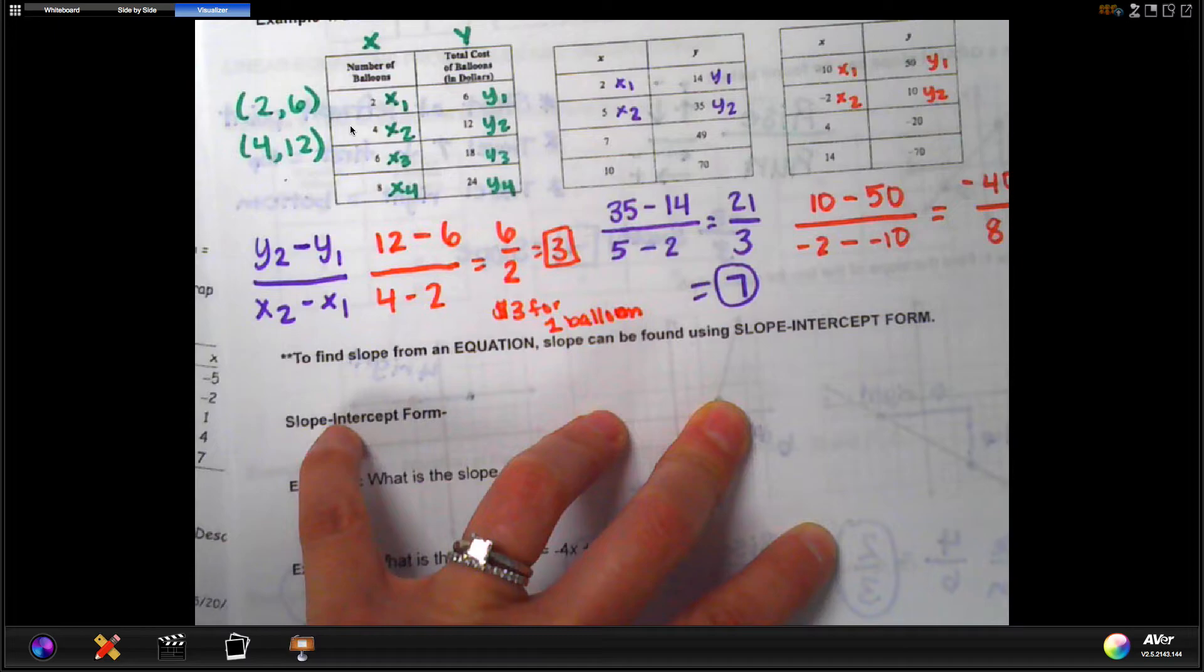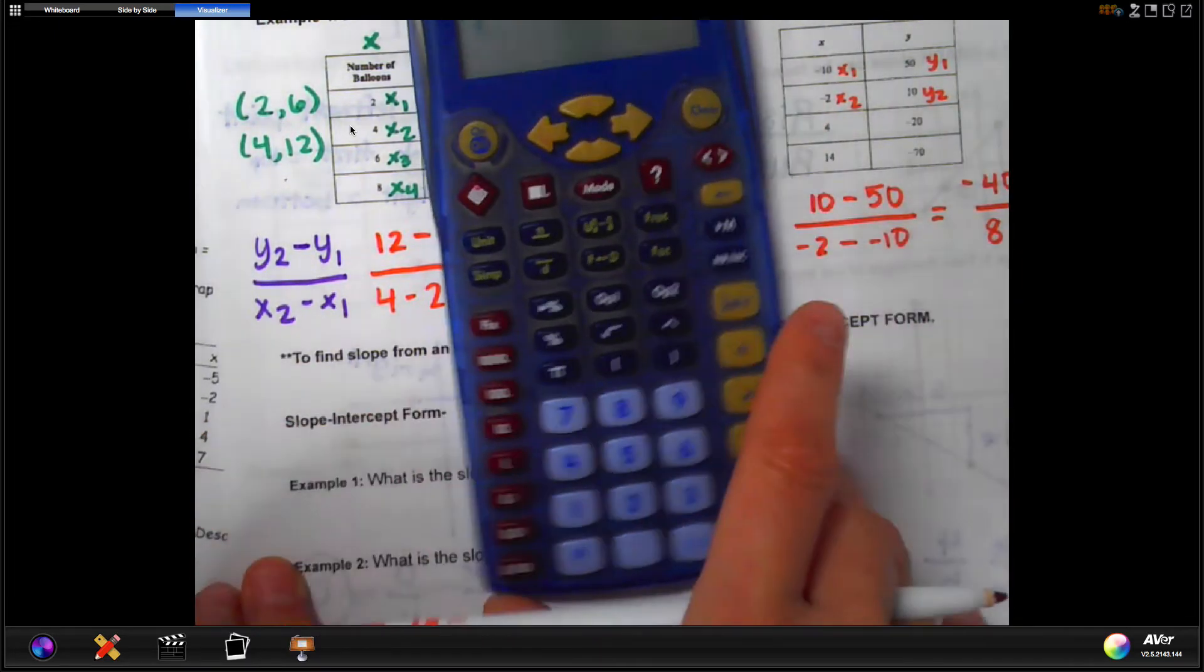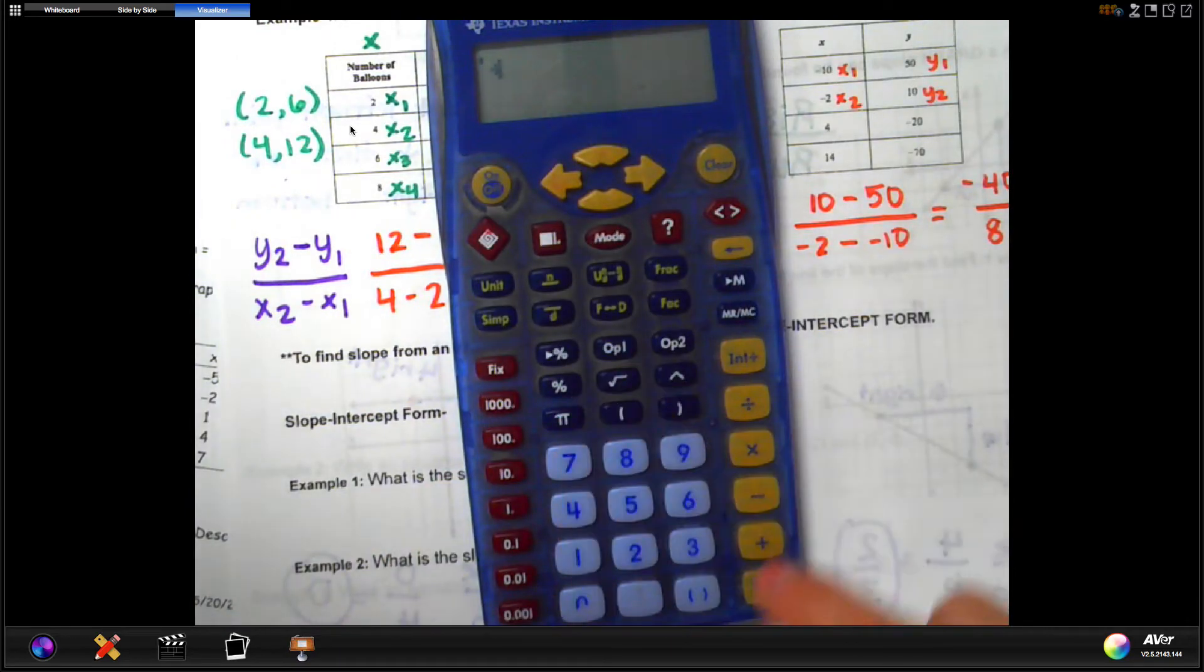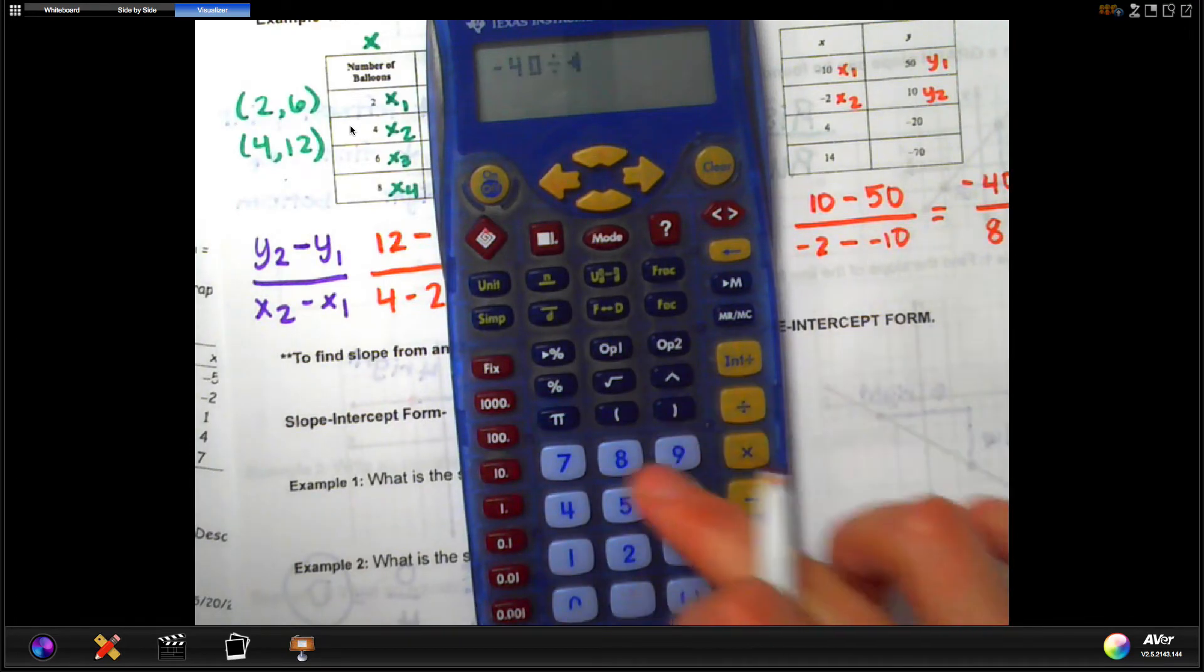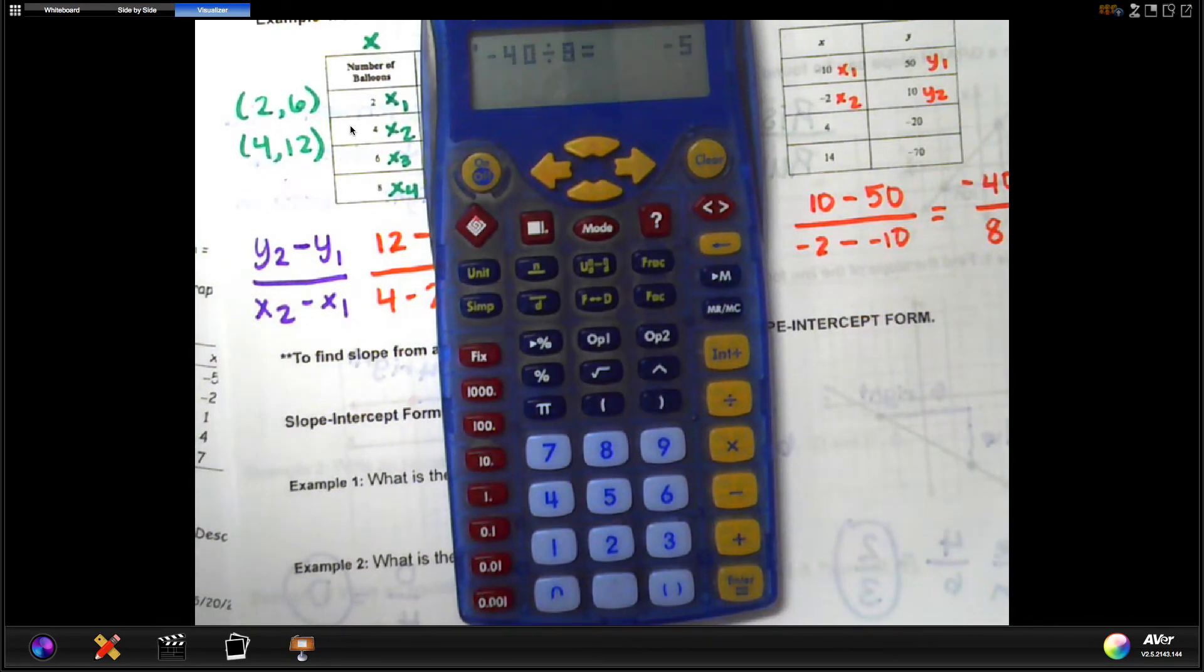Okay, and if you don't trust your knowledge there, please use your calculator, and type it in exactly. Do negative 2 minus negative 10 equals, and it will give you that answer. And then you want to see if it divides. So you can, again, use your calculator if you have one, and you can do, does negative 40 divide 8? And it does. It's negative 5.